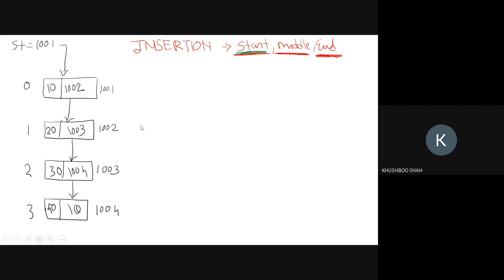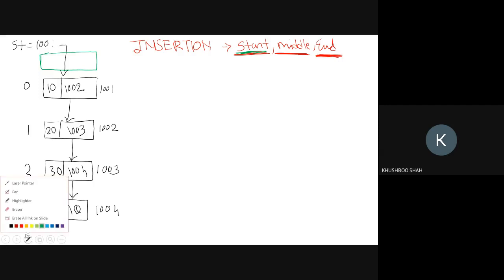So if I want to create a node at the beginning, let's say this is the new node and its address is 2001. This will be the new node.